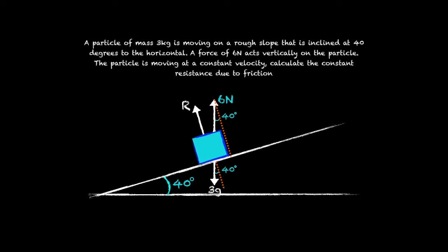So we're now ready to think about which direction friction is traveling in. So if we compare forces parallel to the slope we'll see that 3g sin 40 is greater than 6 sin 40.